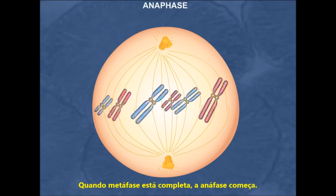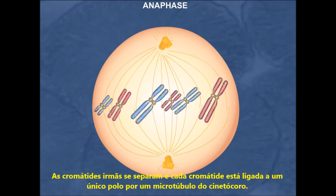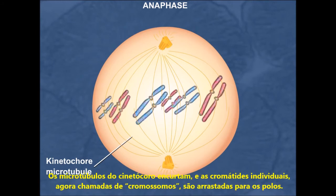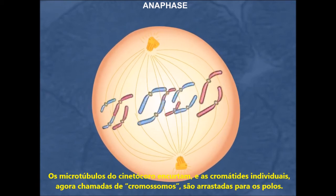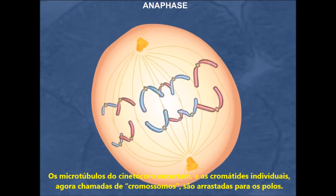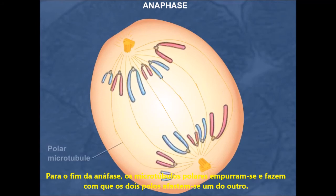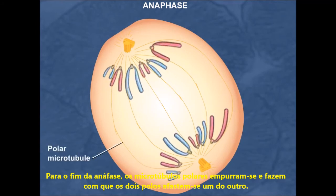When metaphase is completed, anaphase begins. The sister chromatids separate and each chromatid is now linked to only one pole via a kinetochore microtubule. The kinetochore microtubules shorten and the individual chromatids, now called chromosomes, are drawn to the poles. Toward the end of anaphase, the polar microtubules push against each other and cause the two poles to be moved farther away from each other.